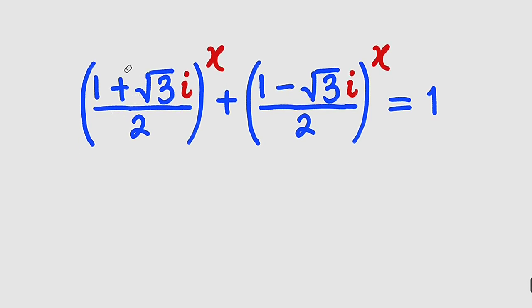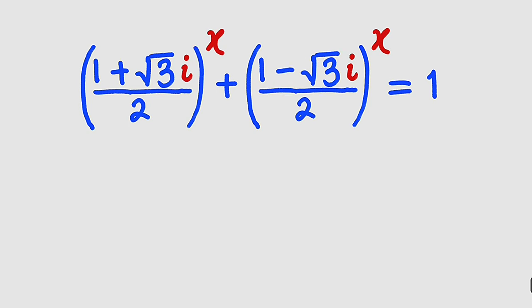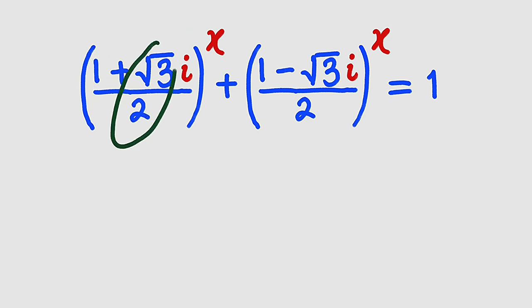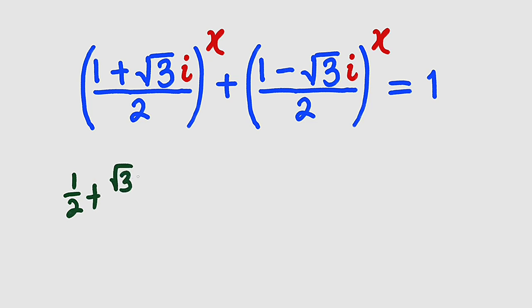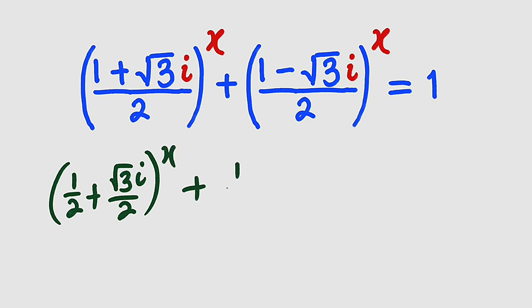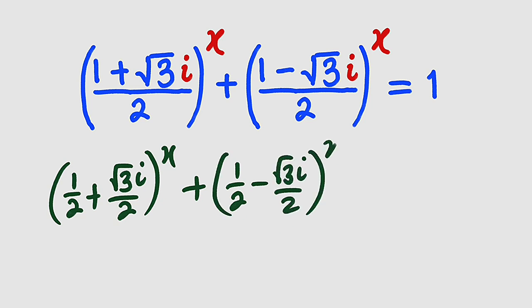I would like to transform the complex number under the parenthesis into its polar form. This is 1 divided by 2 plus root 3 divided by 2 times i. So we can write it as (1 divided by 2 plus root 3i divided by 2) whole to the power of x. Moving to the other parenthesis, we have (1 divided by 2 minus root 3i divided by 2) whole to the power of x, and this is equal to 1.